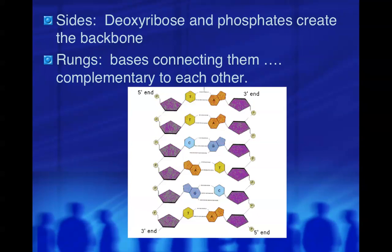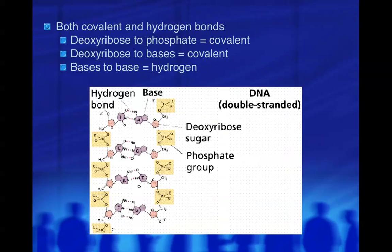The sides of the ladder are the deoxyribose and phosphates, and then the rungs are the bases connecting them — and they are complementary to each other. An important aspect of the DNA structure is the bonding: it's both covalent and hydrogen. Hydrogen bonds are found only between the nitrogen bases, which will be important for replication. The sugar-to-base connections are covalent bonds, so everything is covalent except between the bases.